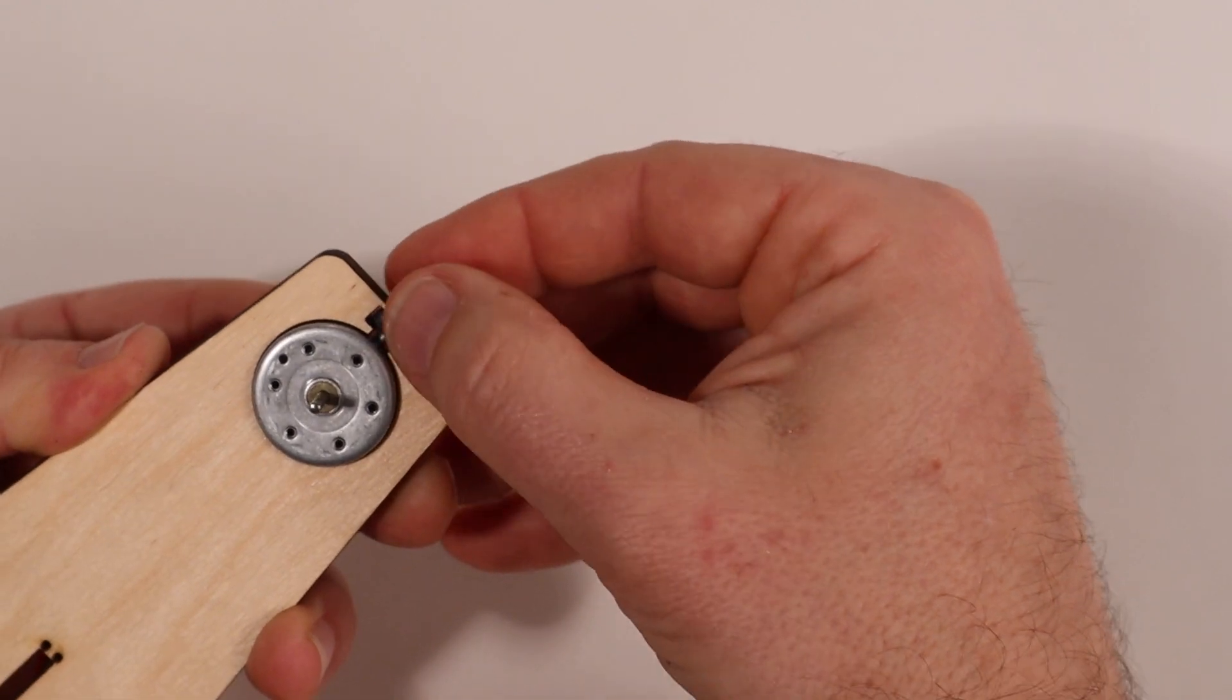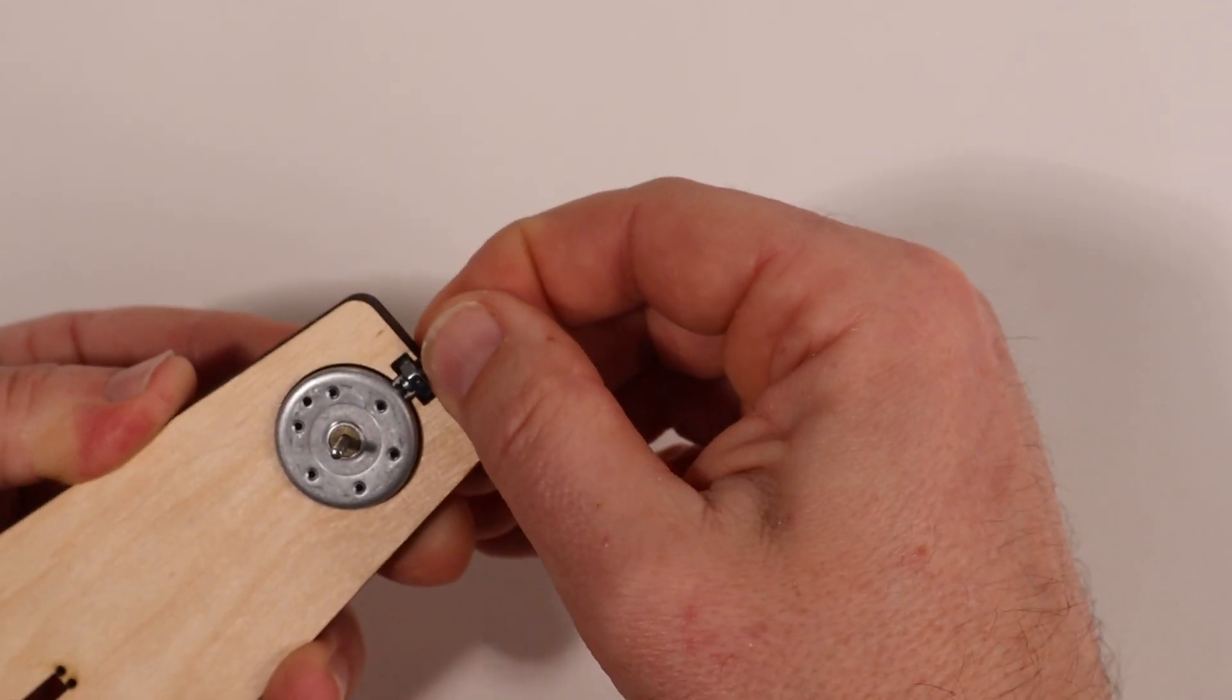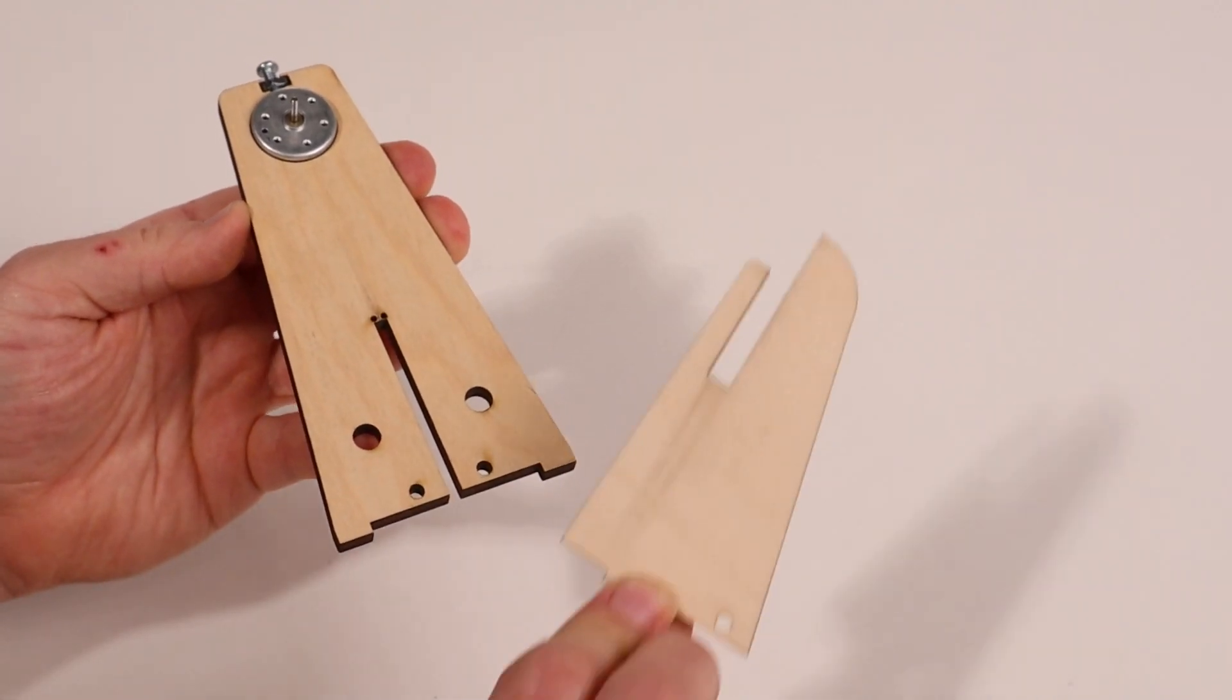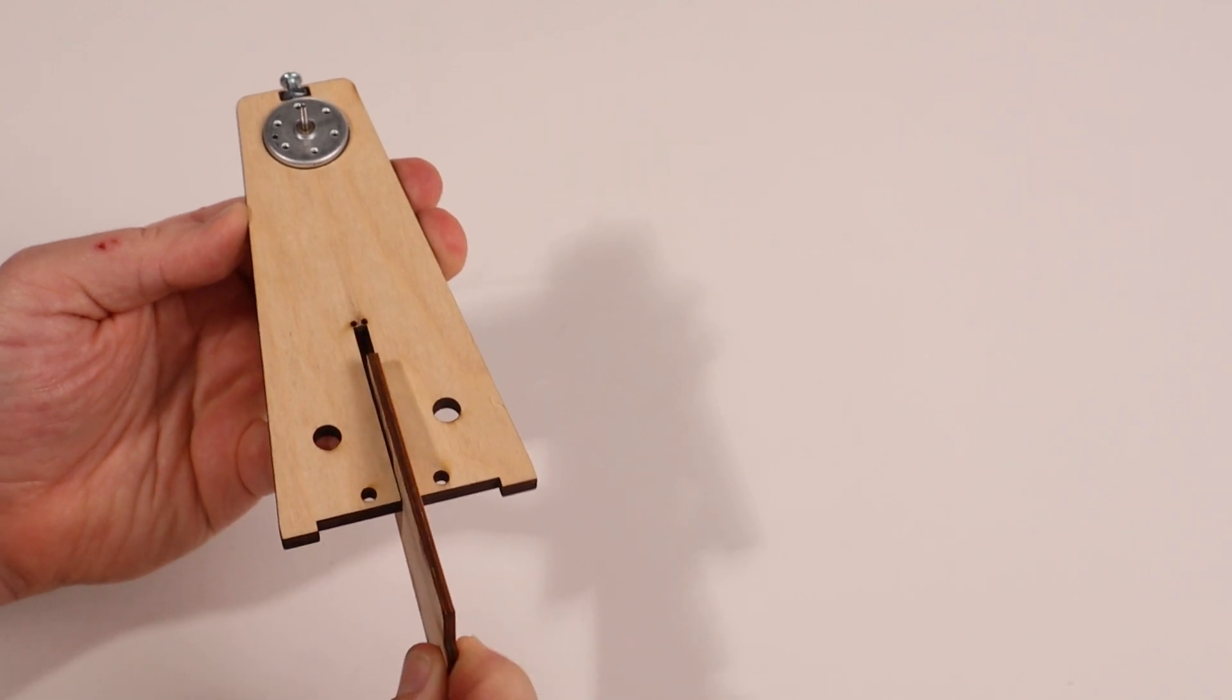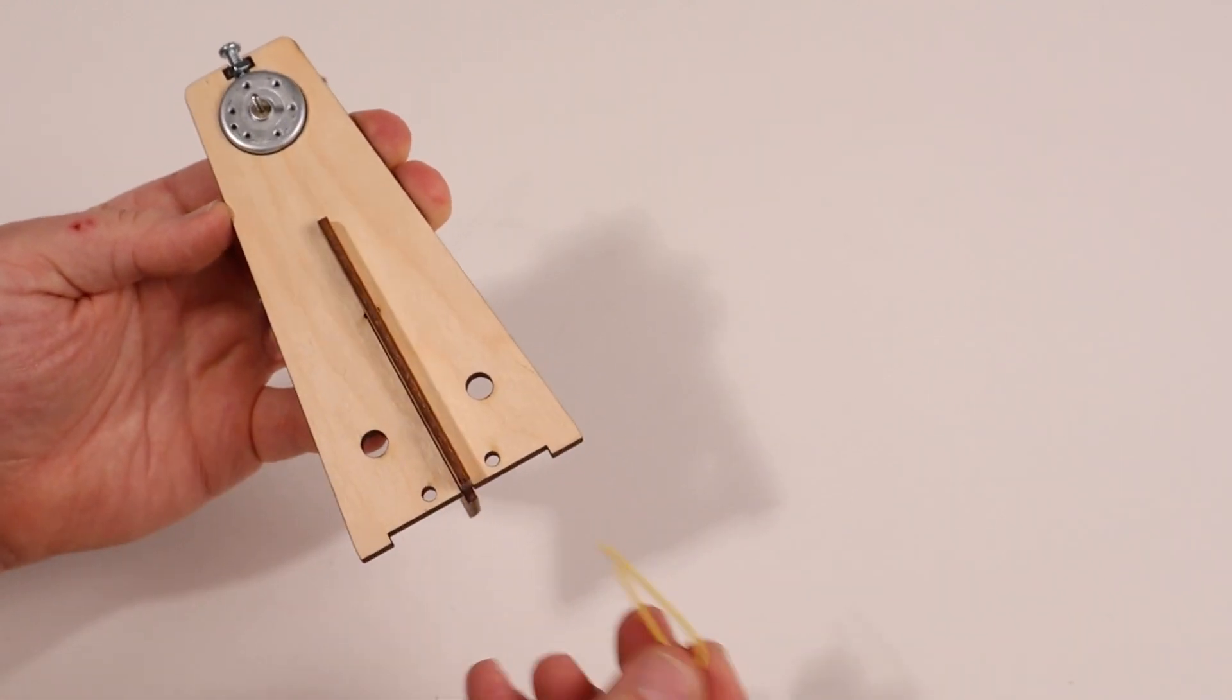The motor should fit snugly, but if it doesn't, you can add the nut and bolt and tighten it finger tight to hold the motor in place. Slide the second, smaller piece of the tower in place. The smaller part of it faces front and the larger part faces the back.